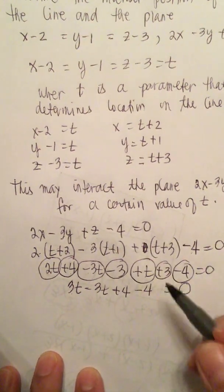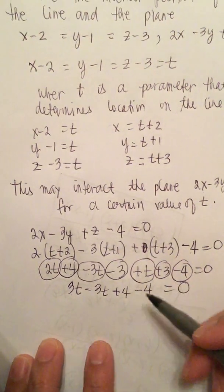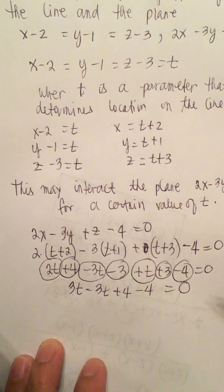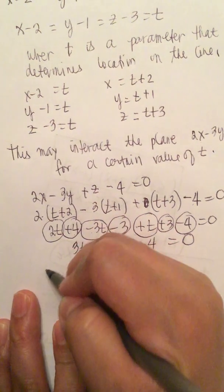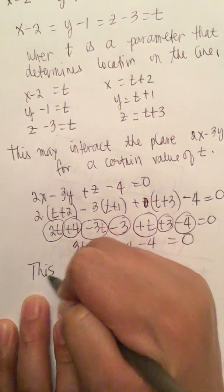Now this is true for all values of t, meaning the line is in the plane. All points on the line are mutual with the plane. So let's write that down.